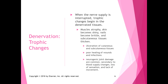When the nerve supply is interrupted, you get trophic changes in the denervated tissues, which include muscle atrophy, the skin becomes shiny, nails become brittle, and subcutaneous tissues thicken — it changes the look of the tissue itself. You can also get ulceration of cutaneous and subcutaneous tissues, poor healing of wounds and infections, and eventually neurogenic joint damage secondary to blood supply changes, loss of sensation, and lack of movement.